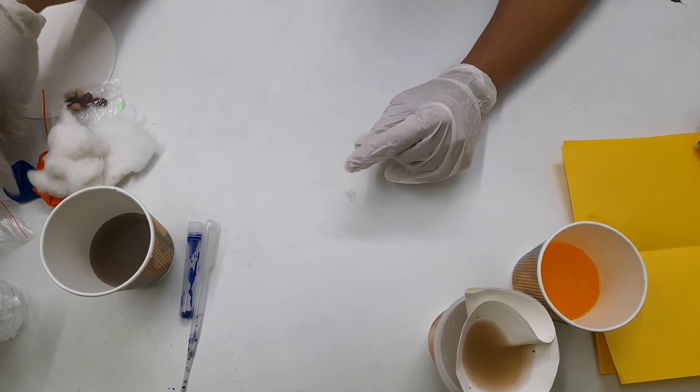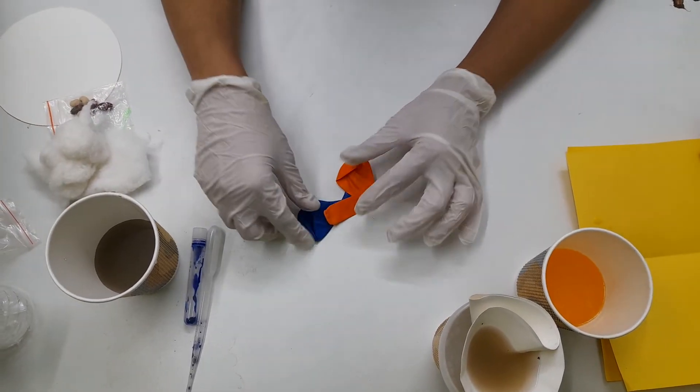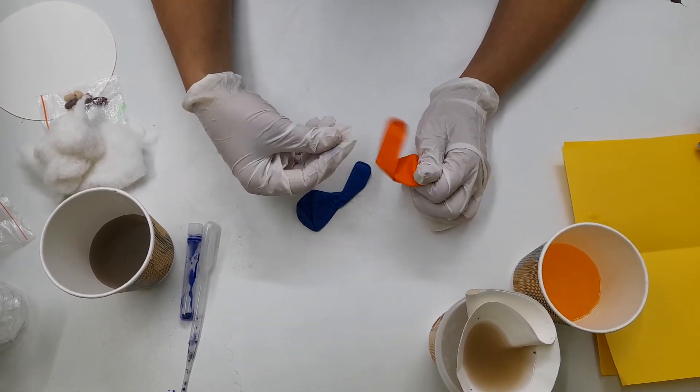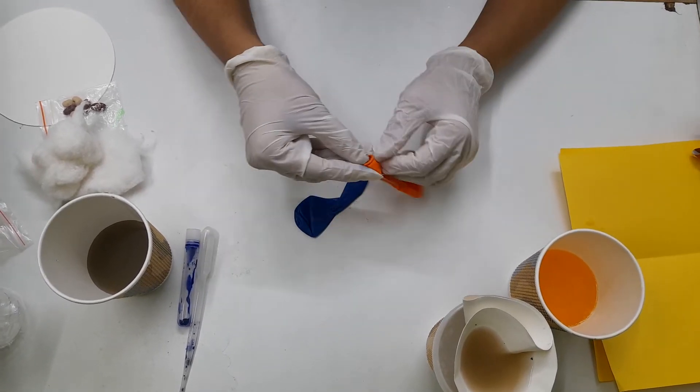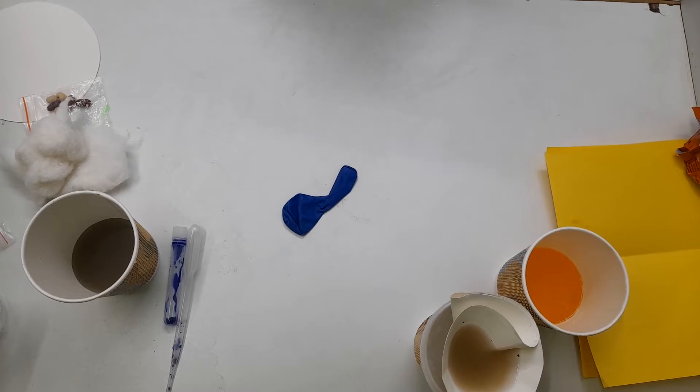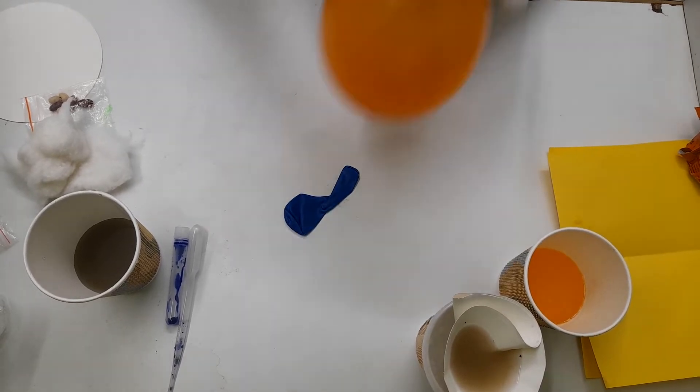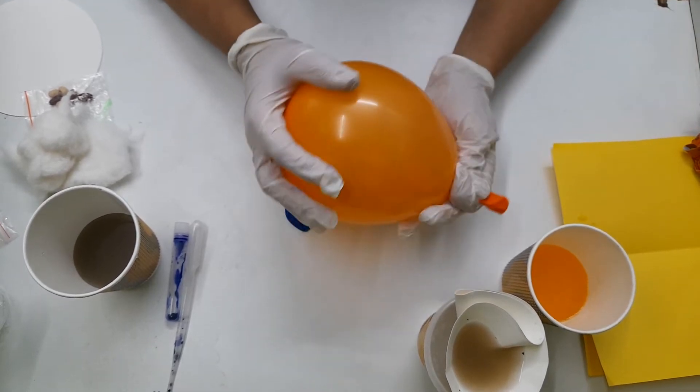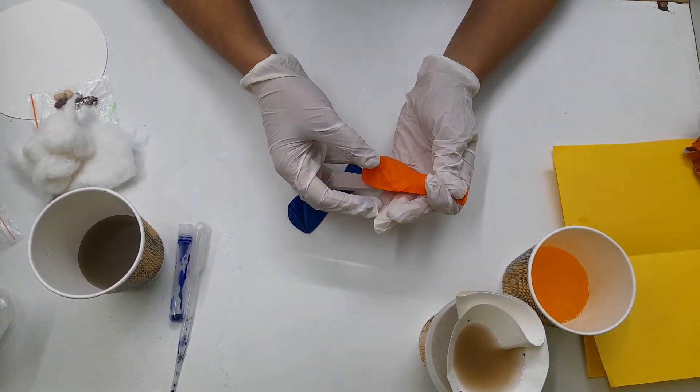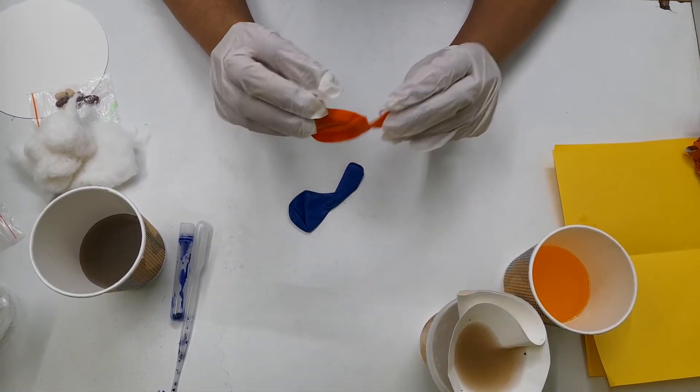Let's just move on to the next thing what we have. So we have two balloons. So what we can do is if we inflate any one of the balloon. So after inflating its shape is changed. So this is a reversible change.